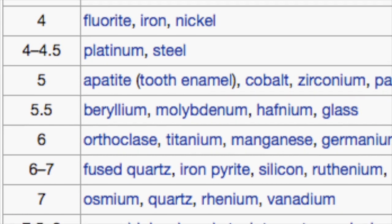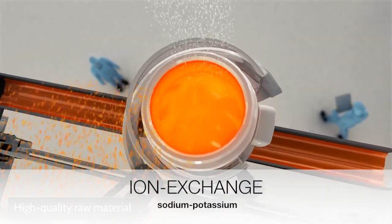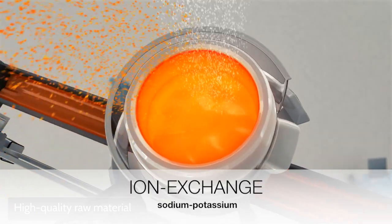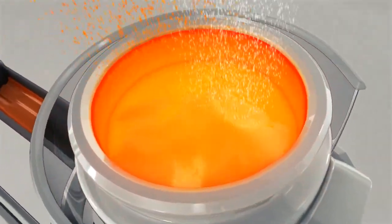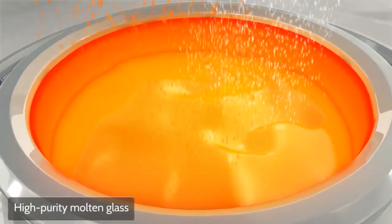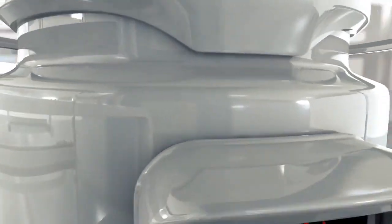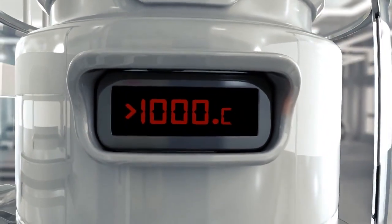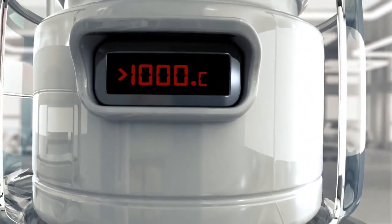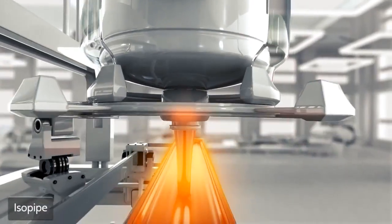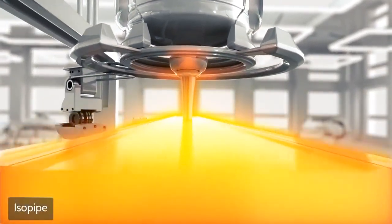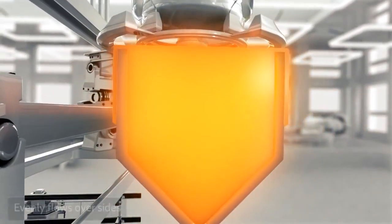The reason for that is Gorilla Glass has a special craft called ionic exchange. The glass is placed in a hot bath of molten salt. Smaller sodium ions leave the glass, and large potassium ions from the salt bath replace them. These large ions take up more room and are pressed together when the glass cools, producing a layer of compressive stress on the surface of the glass.